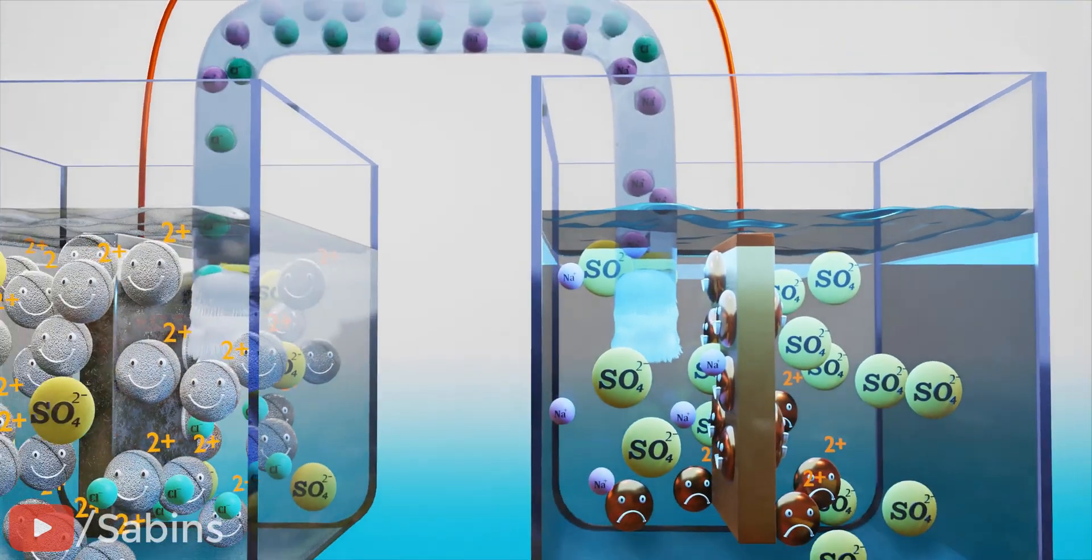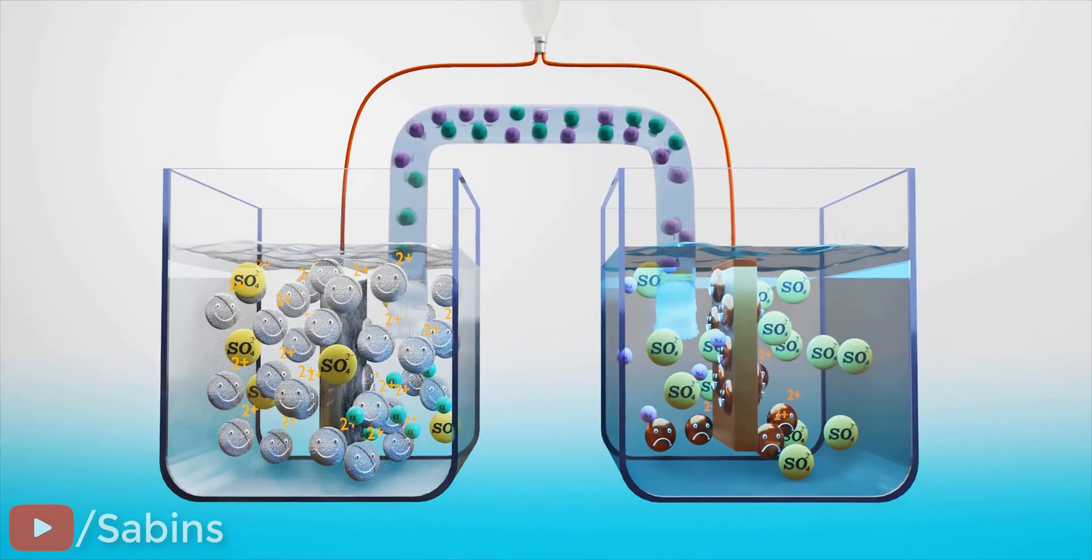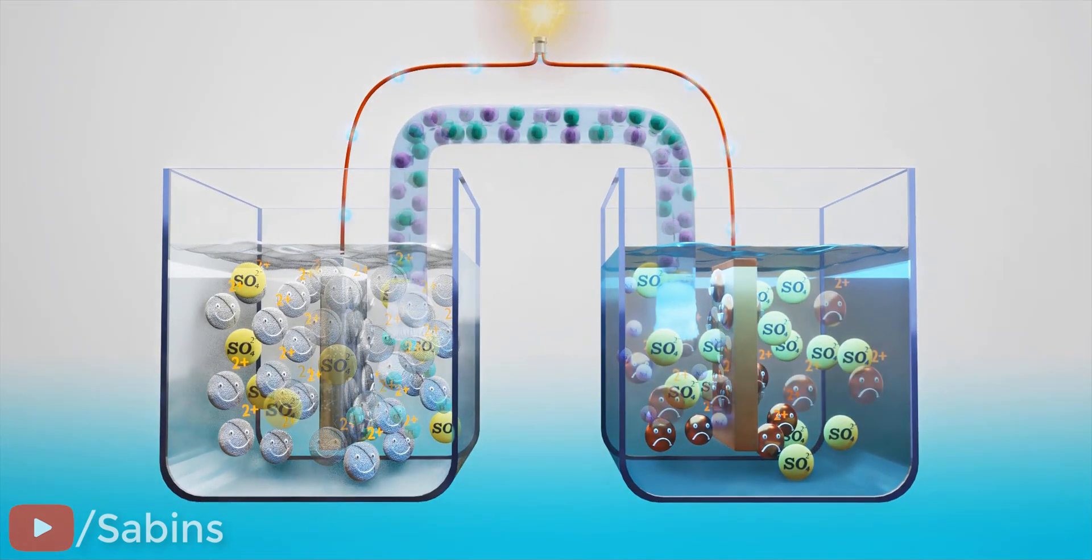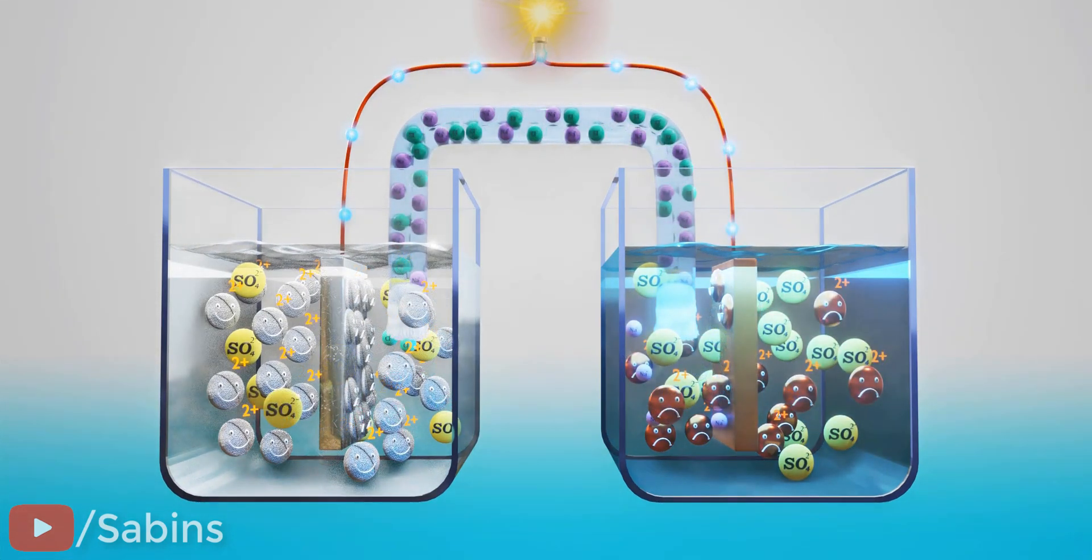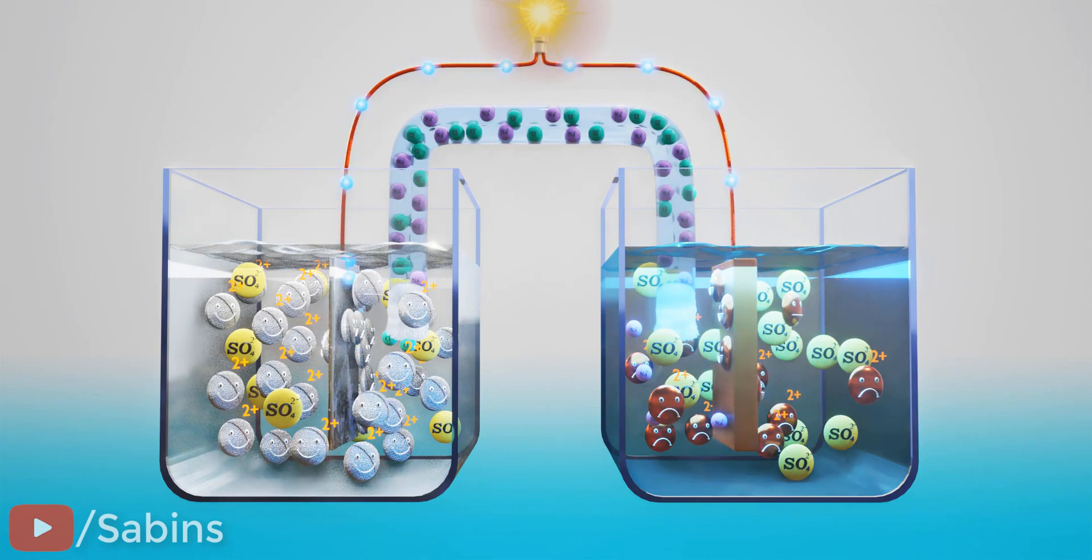The cell we have just created is known as a galvanic or voltaic cell. You can observe that, over time, the zinc metal bar erodes as it loses zinc ions, becoming thinner and thinner.